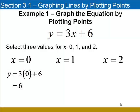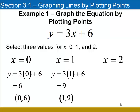I'll substitute 0 for x into the equation and find that y equals 6, so my first ordered pair is 0, 6. Next, I'll substitute 1 for x and get y equals 9, so the ordered pair is 1, 9.